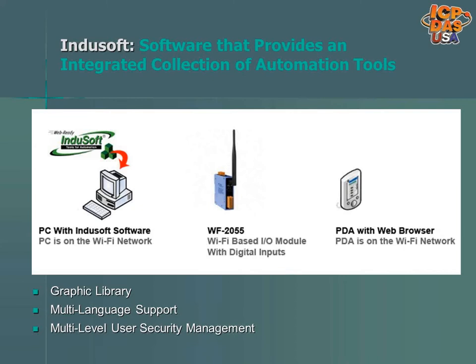SCADA software can be used with wireless networks for more advanced applications that may need to support multiple users, generate reports, use recipes, and animated graphics. SCADA software offers web publishing capabilities for remote access through a web browser. Different users of SCADA software can have different permissions and access to different areas of the system. Administrator users, for example, could have access to make changes, and operator users could see the status of a system. SCADA software can generate customized reports, and you can configure the system with print buttons so you can print customized reports or save them as a PDF file for later use.